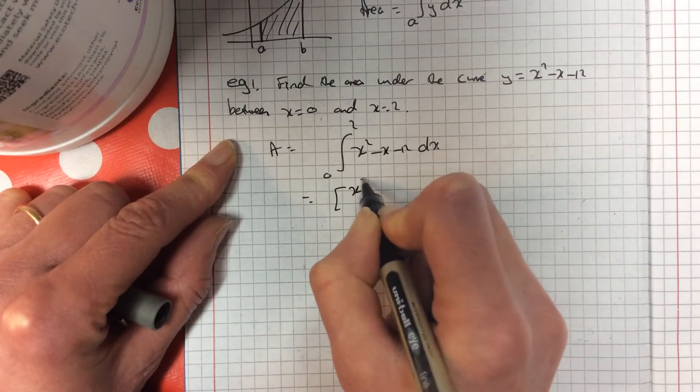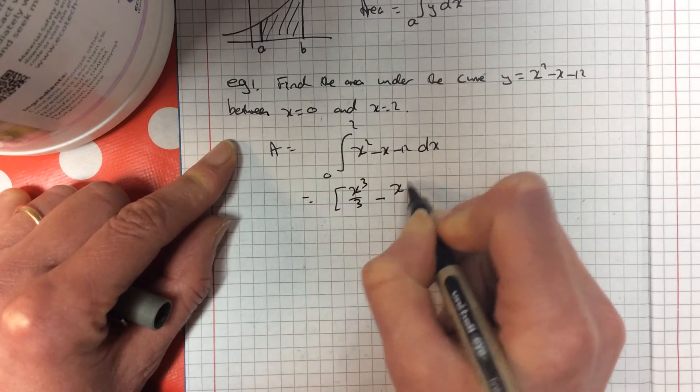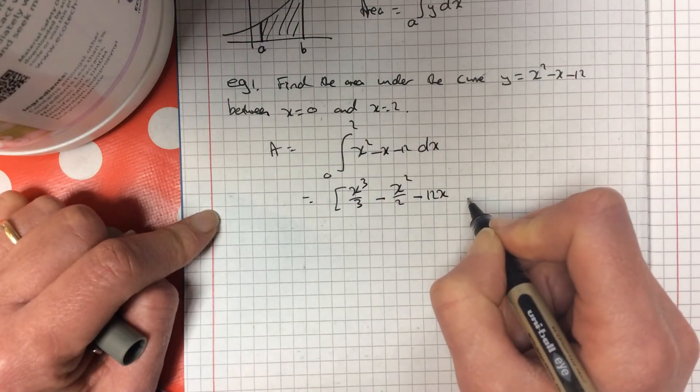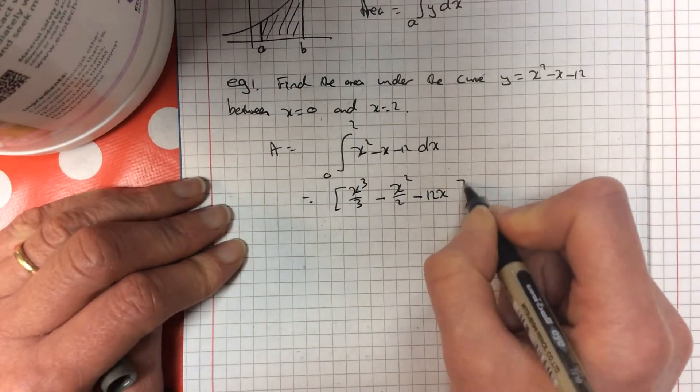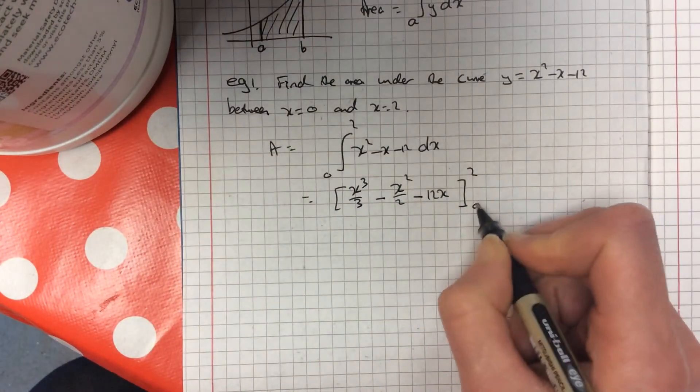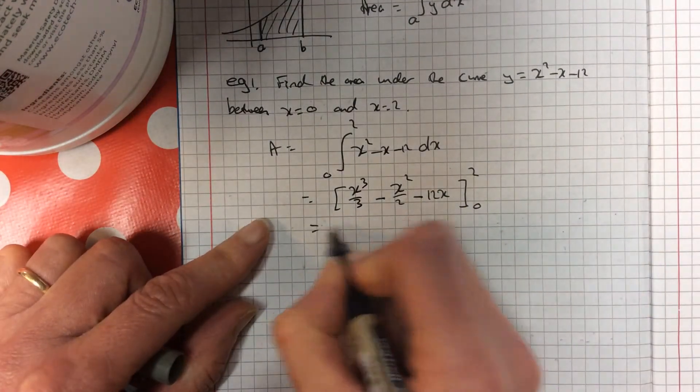So do you remember how to integrate? Add 1, divide by it. Add 1, divide by it. x reappears. Now, you can put your plus c in here, or you can leave it out, because it's going to cancel off, because this is definite integration, where you definitely know the values. So up to you. I'll leave it off this time.